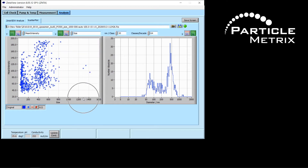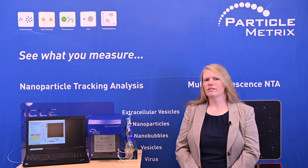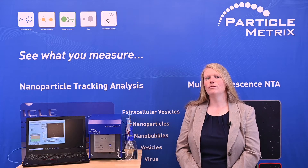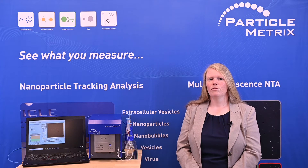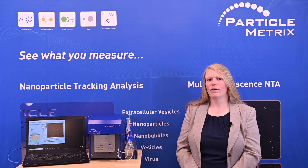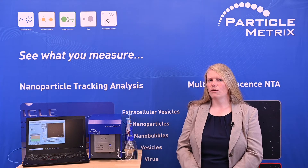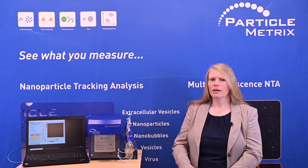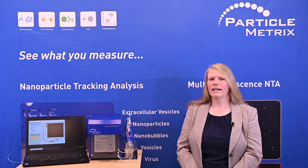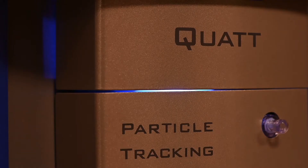Since fluorescence labeling of different proteins or structures is a useful tool for vesicle characterization, we optimized the ZetaVue for fluorescence measurements. In our latest ZetaVue Quad model, we integrated four lasers from violet to red to be able to use the full bandwidth of flow fluorescence.